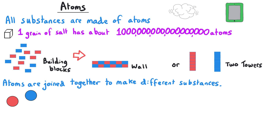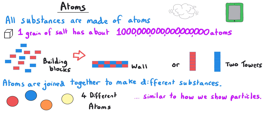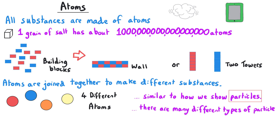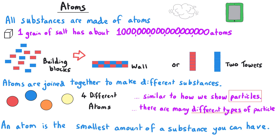The biggest difference between the building blocks idea and atoms themselves is that atoms are normally represented as being circular, and you might recognise this method of showing atoms from lower down your science studies, where they may have been referred to simply as particles. But the idea of particles is actually a bit more complicated, because there are different types of particle, and the smallest of these types are called atoms.